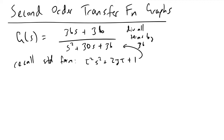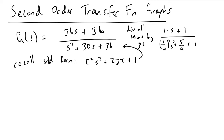What we find is that you would have one times s plus one, divided by the quantity one over six squared, plus five over six times s plus one.